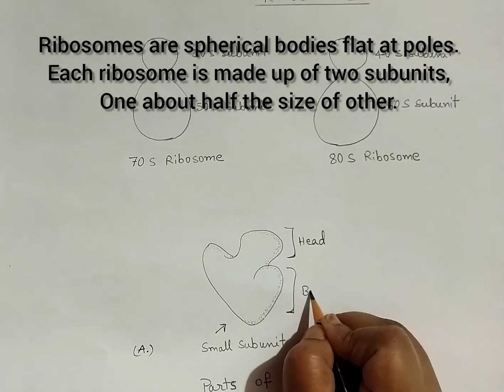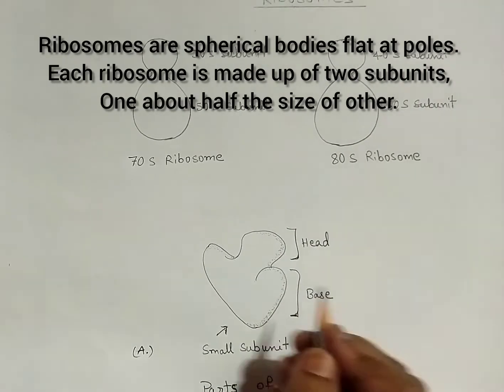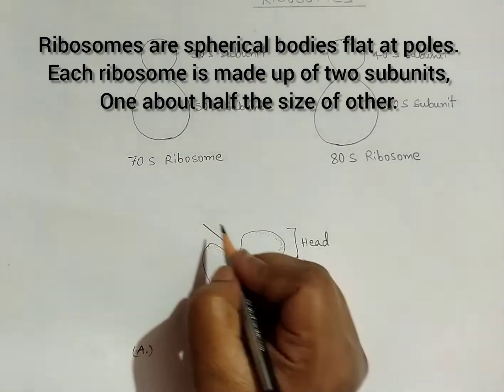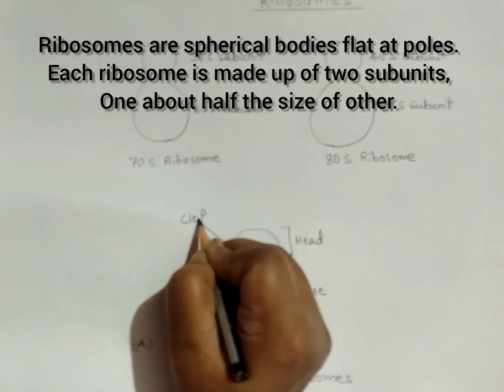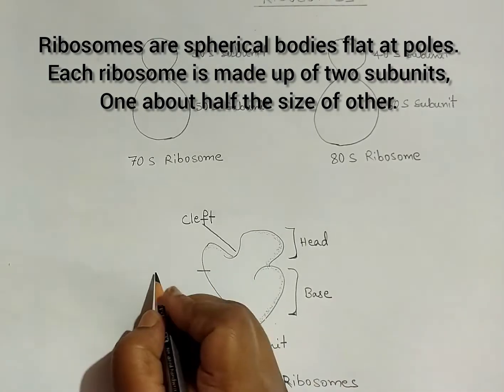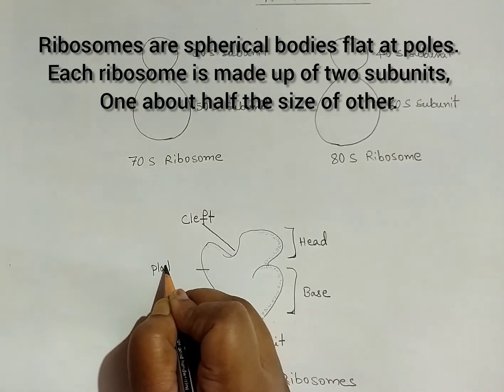Ribosomes are spherical bodies flat at poles. Each ribosome is made up of two subunits, one about half the size of the other.